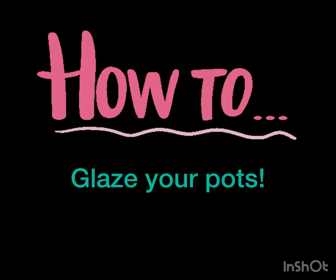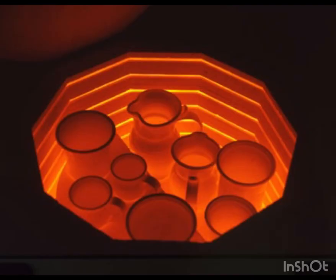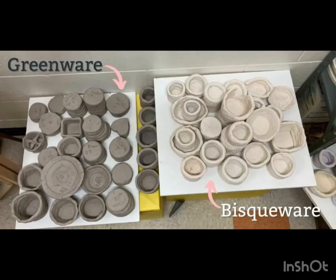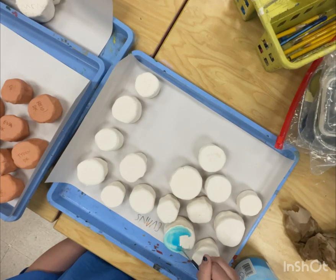Hey everybody and welcome to glazing day. Overnight I put your clay in the kiln at 2,000 degrees and it changed from greenware to bisqueware. Now it's white and it's breakable.